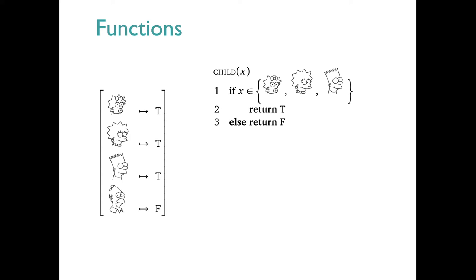This second version is more familiar from programming. We're looking at the function called child. It has one argument, given here as x. If the argument is a member of the set of children, we return true, otherwise we return false.